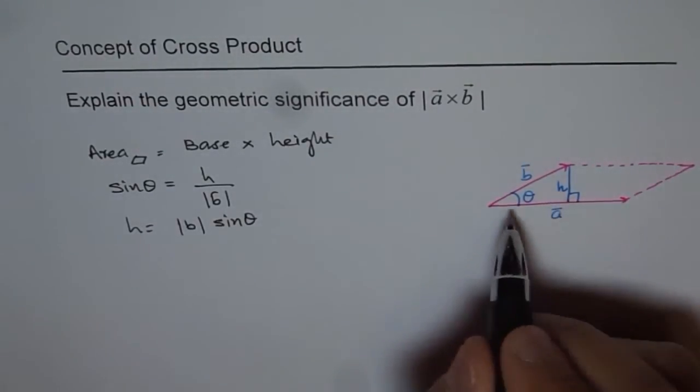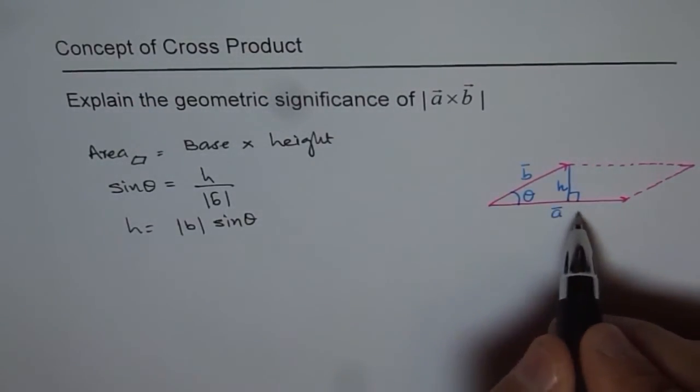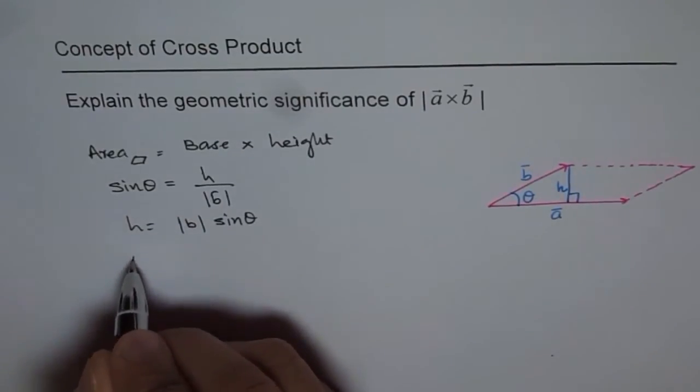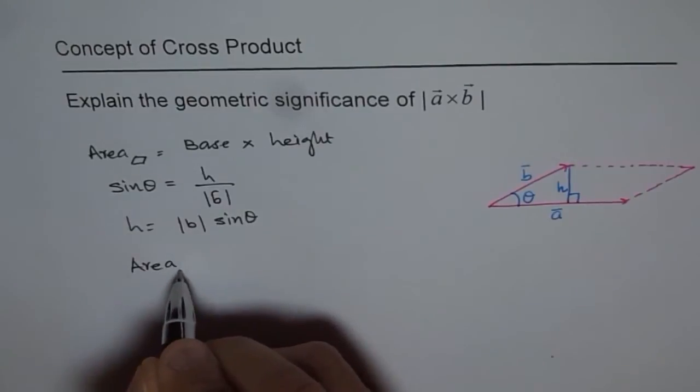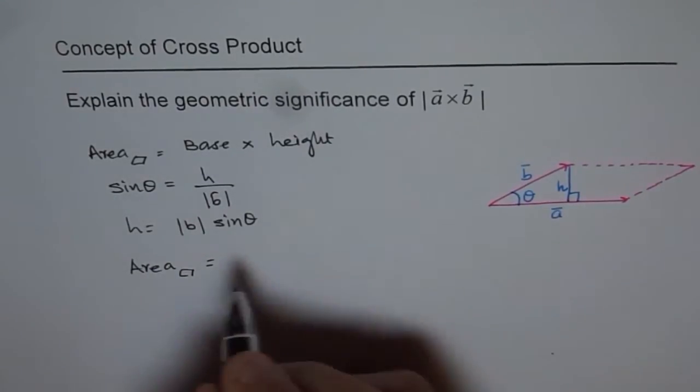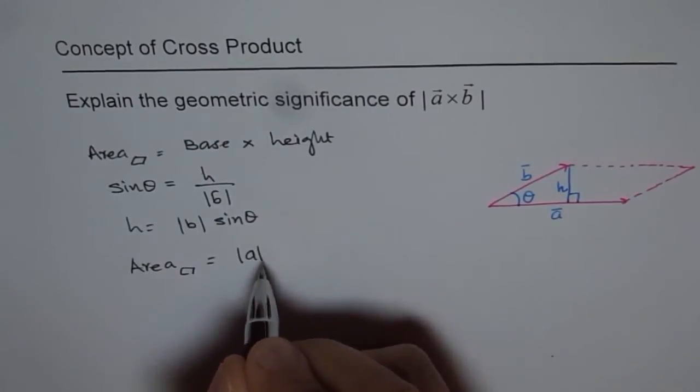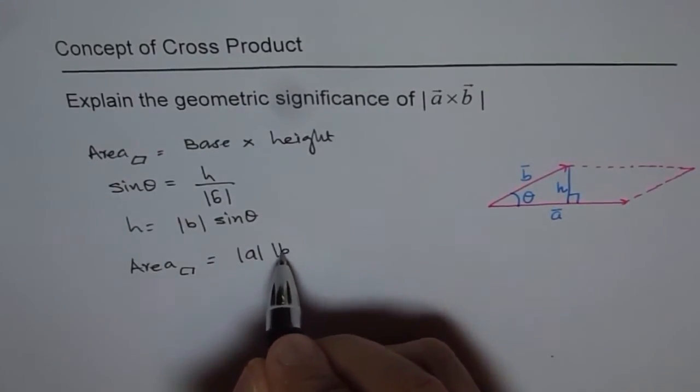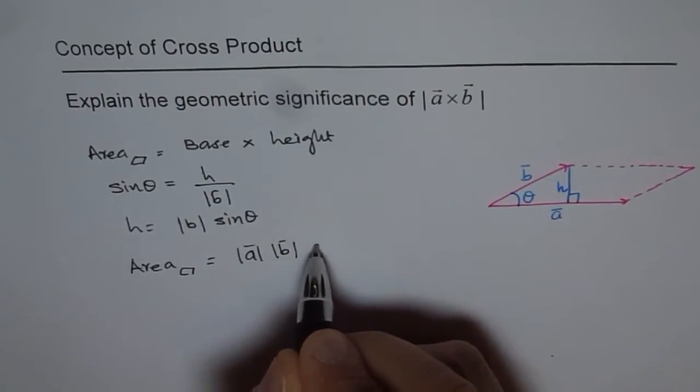And what is the base of this? The base is A, magnitude A. So we get area of this parallelogram equals to base, which is magnitude of A times height, which is magnitude of B sine theta.